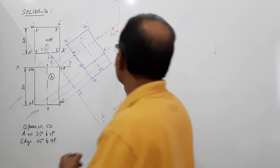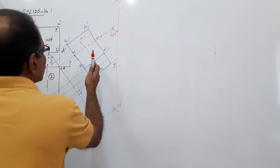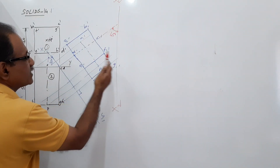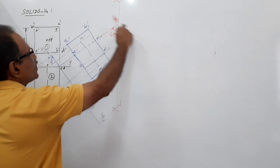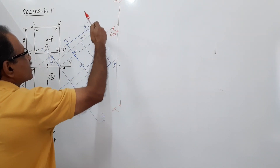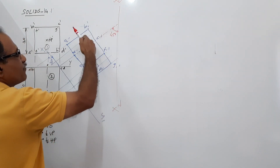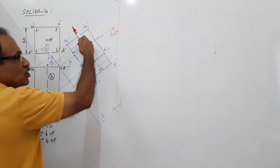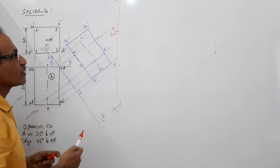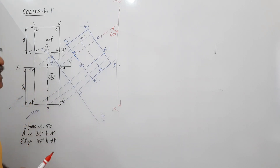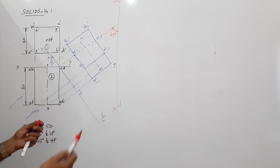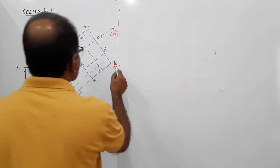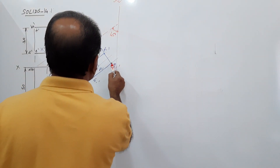If you draw X2Y2 here, the top square face is nearer to HP. If you draw X2Y2 on the other side, the bottom square face is nearer to HP. That difference will come, but it doesn't make any complication for us. Draw projectors perpendicular to X2Y2.